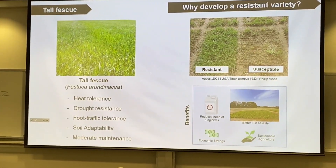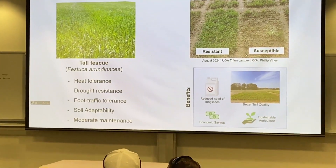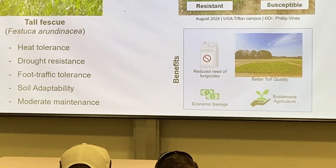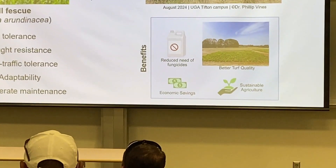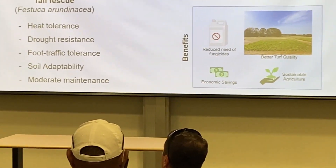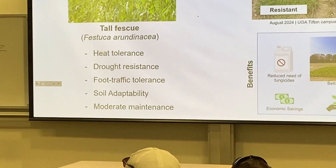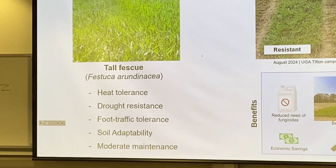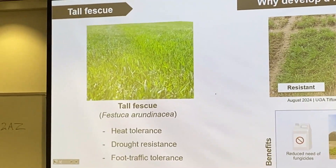Talking about tall fescue grass — you might have seen some tall fescue in the morning. Tall fescue is a cool-season bunch-type grass usually acclimated to cooler temperatures, but it is also grown widely in the transition zone.